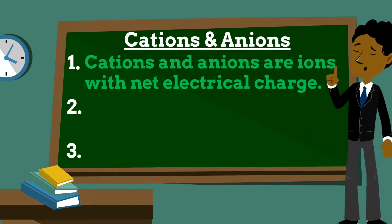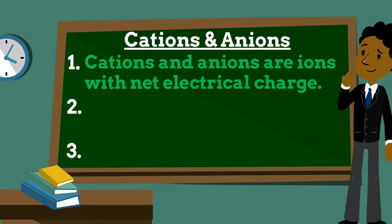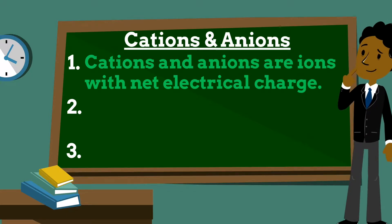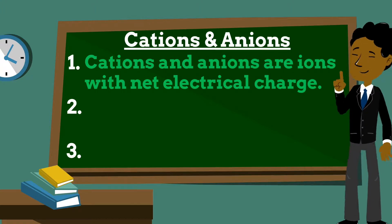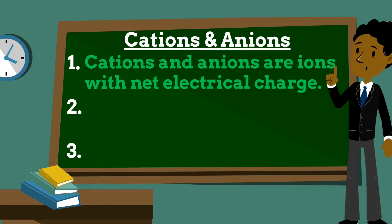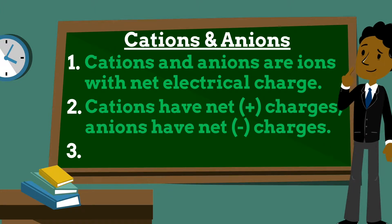If the chemical species has more protons than electrons, it carries a net positive charge. If there are more electrons than protons, the species has a negative charge. The number of neutrons determines the isotope of an element but does not affect the electrical charge.